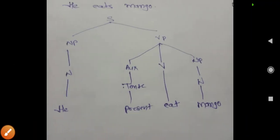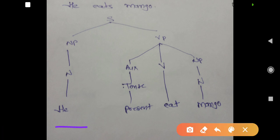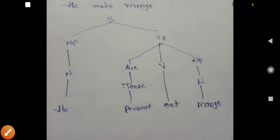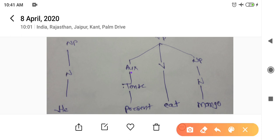Now, when you can identify and segregate the constituents of these different parts of speech, the most important step is to identify the NP — noun phrase — and VP — verb phrase. When you divide the sentence into these two parts, then identify all the constituents within each. Let's now see these tree diagrams — how to make a tree diagram. We'll see this example: 'He eats mango.'